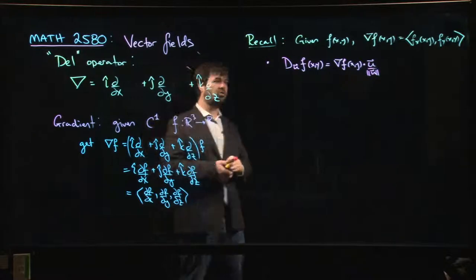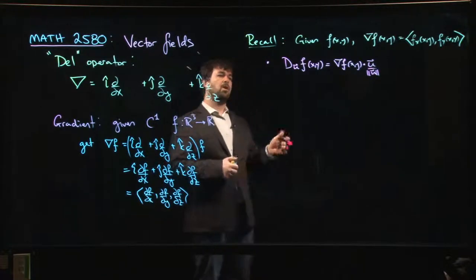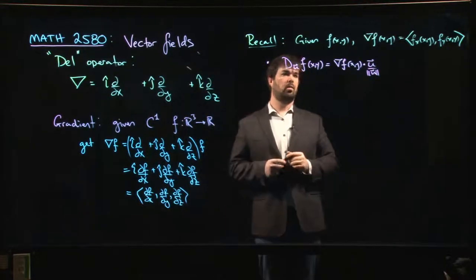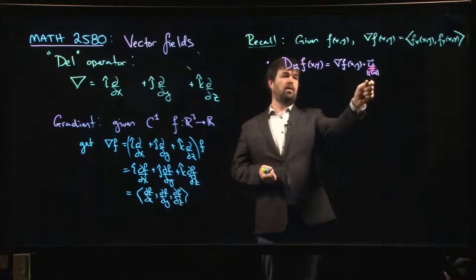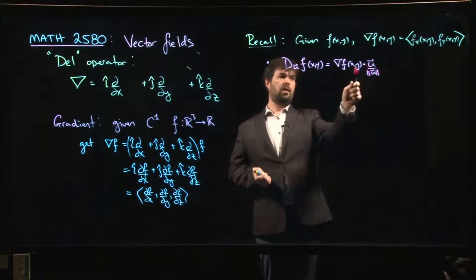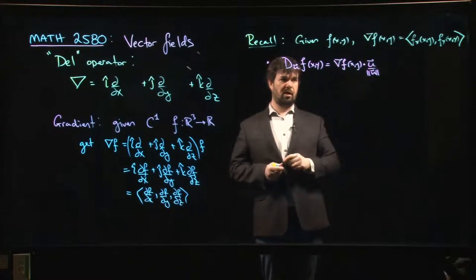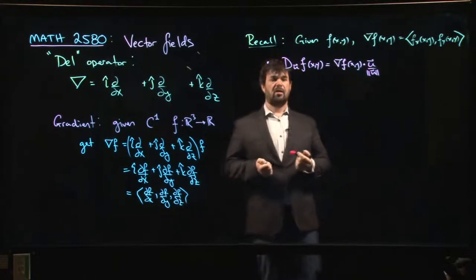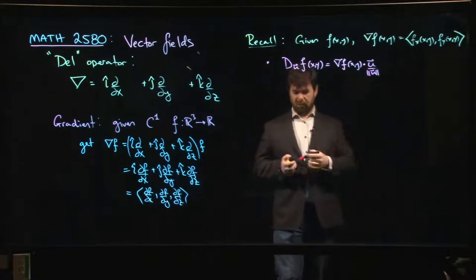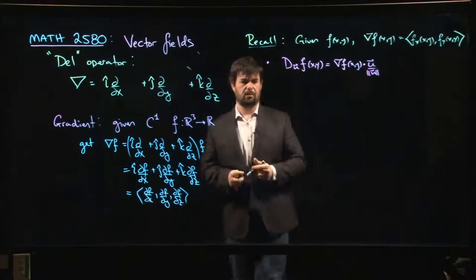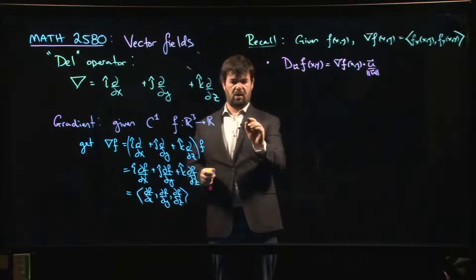So this directional derivative gives you a number, and that number is measuring the rate at which your function is changing in a particular direction. You can see that the rate doesn't depend on the size of u, it only depends on the direction of u. It depends on the magnitude of the gradient, so the gradient is giving you this measure of steepness. If we think about a function of two variables, let's actually start an example.